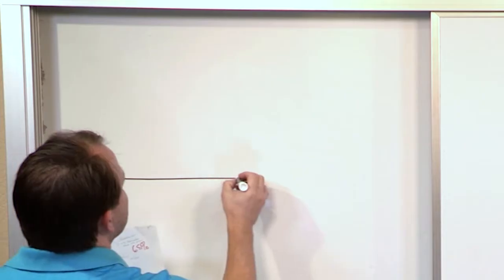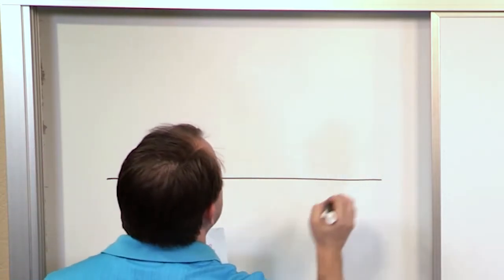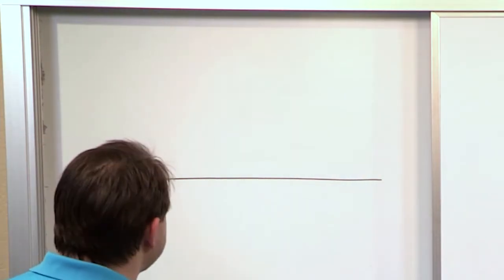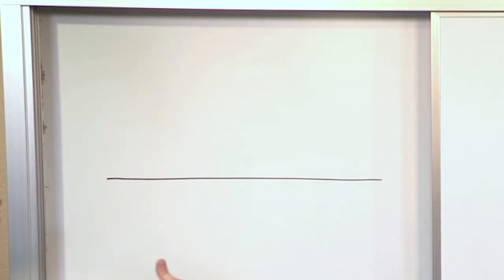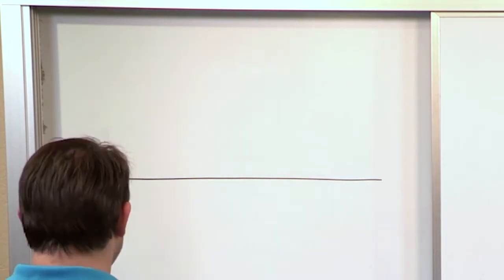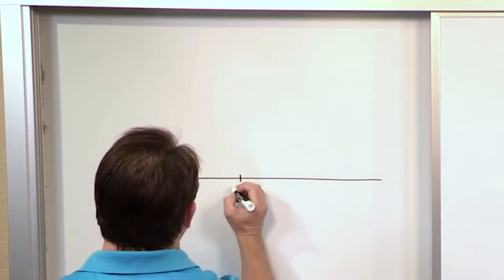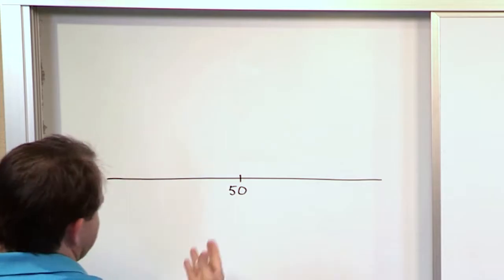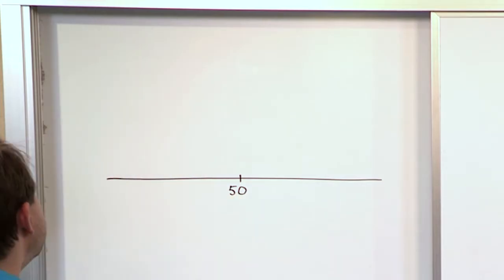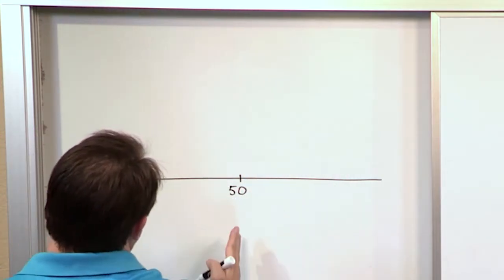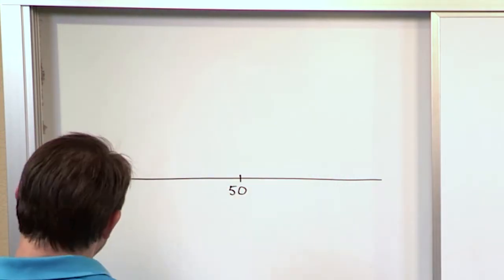If I have a regular old probability distribution, it could be the length of watermelons randomly drawn from a bucket, or the diameter of pumpkins — it could be anything like that. Let's say we have a normal distribution with a mean of 50. This could be the number of centimeters diameter pumpkins are. When you average them all out, this could be the mean value.